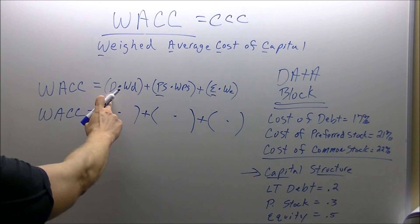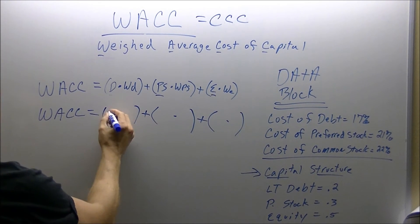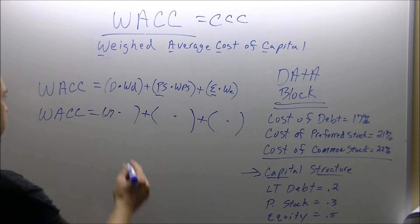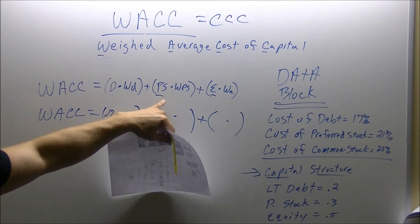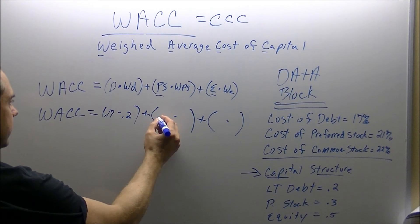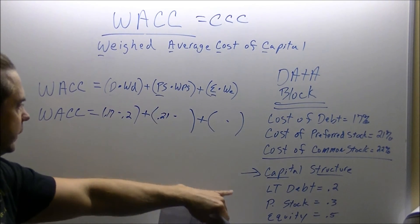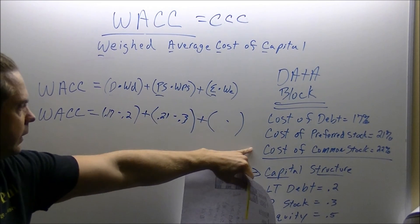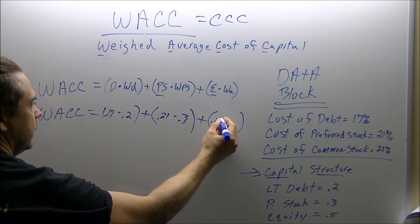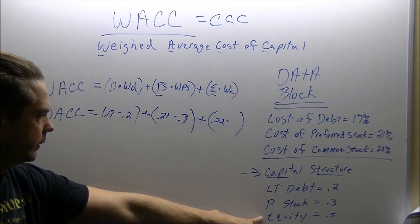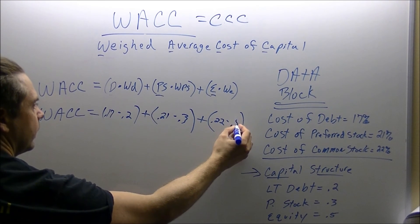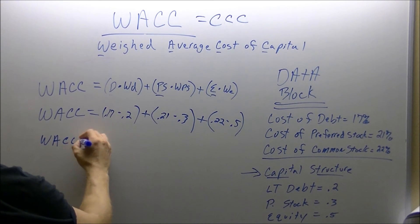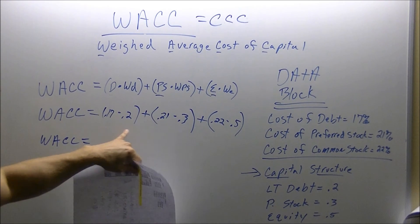The first number is going to be our debt, 0.17, then we are going to go for the weighted debt, 0.2. Preferred stock cost is 0.21, weight of preferred stock is 0.3. Cost of equity is 0.22, weight of equity is 0.5. The next step is to drop our WACC, put our equal sign, and we are going to solve the parentheses first.